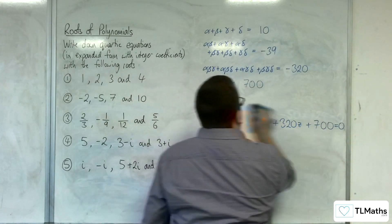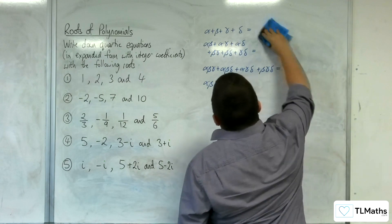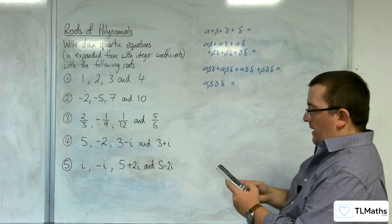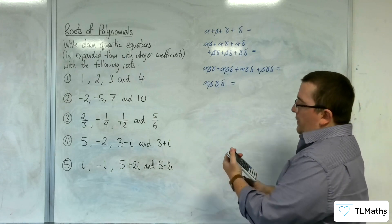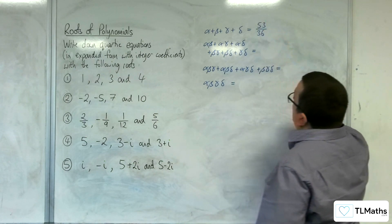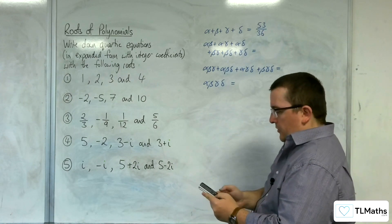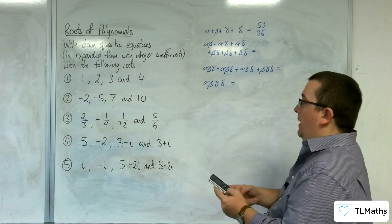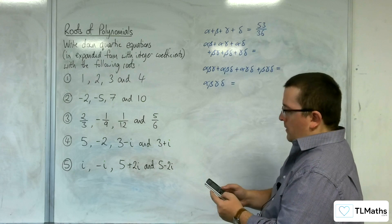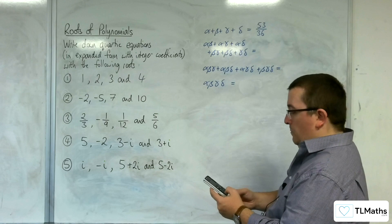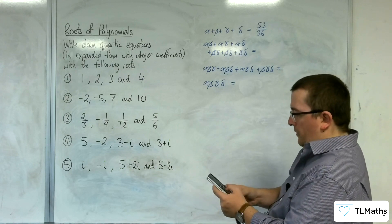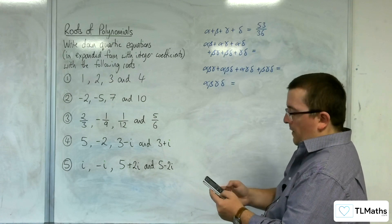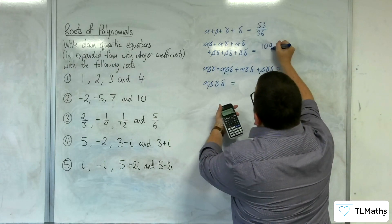Let's try number 3. So we have 2 thirds, take away 1 ninth, plus 1 twelfth, plus 5 sixths, and we get 53 over 36. Then we've got 2 thirds times minus 1 ninth, plus 2 thirds times 1 twelfth, plus 2 thirds times 5 sixths, plus minus 1 ninth times 1 twelfth, plus negative 1 ninth times 5 sixths, plus 1 twelfth times 5 sixths. And we get 109 over 216.